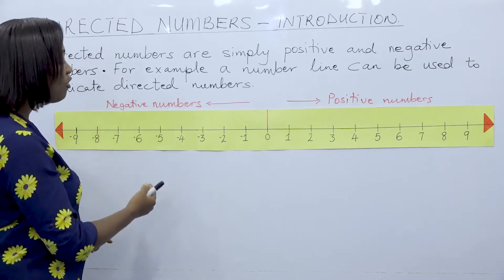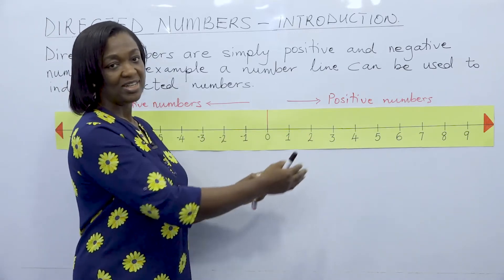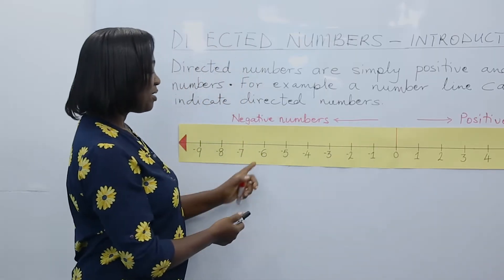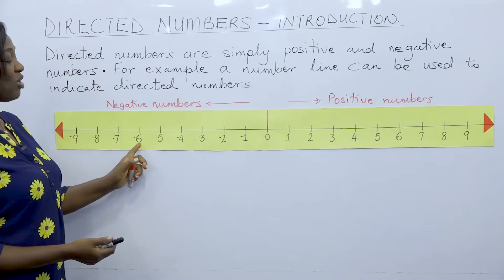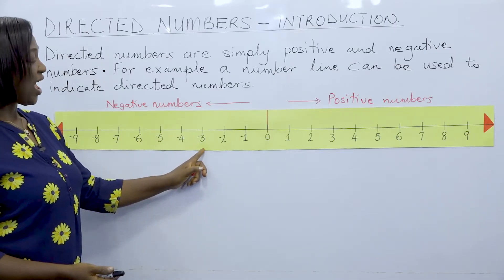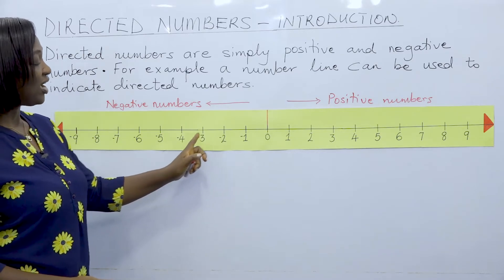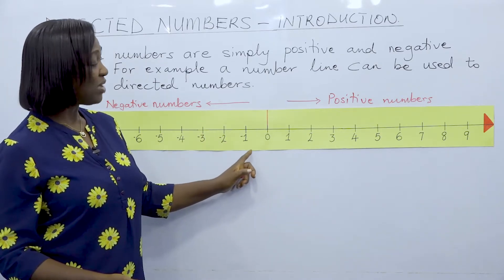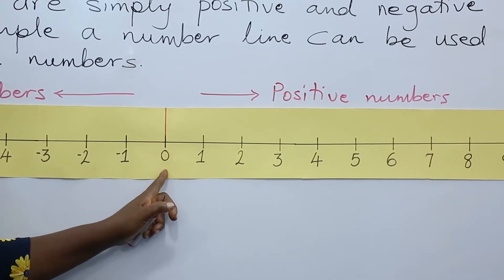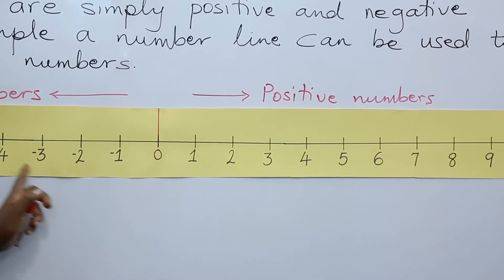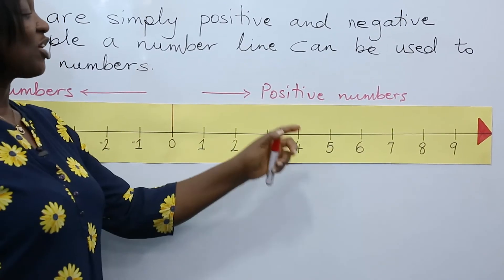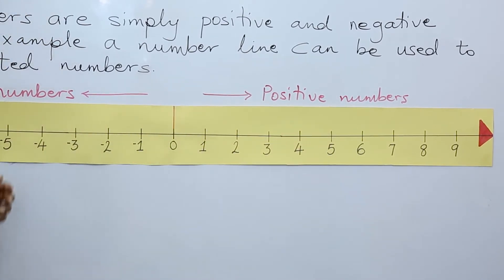As you go from left to right, the numbers increase. So, we are saying that minus six is smaller than minus three, and minus three is smaller than minus one. That means zero is greater than minus one. Numbers increase as you go from left to right, and they decrease as you go from right to left.